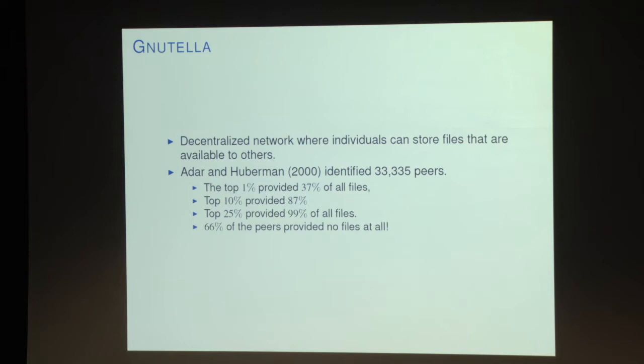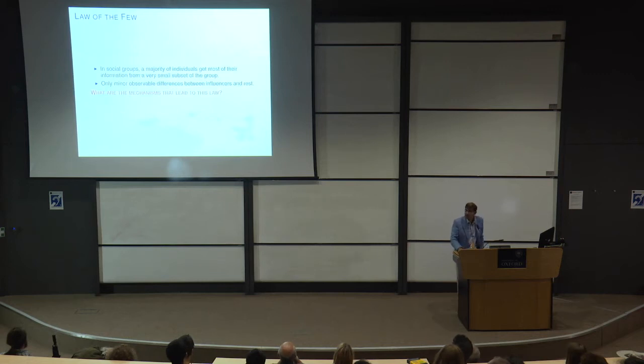Here's another example taken from Nutella, an online forum — a typical example of peer-to-peer networks. They have this feature that a very small fraction — in this instance 25% of the people on this network — provide files, while almost two-thirds provide no files at all. So this is a world in which most of the goods, the information, the files are being provided by a very small fraction, roughly 25% of the network. This is another instance of what I will refer to as the law of the few.